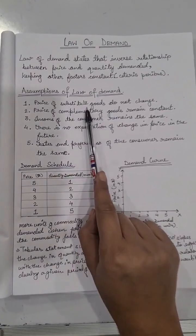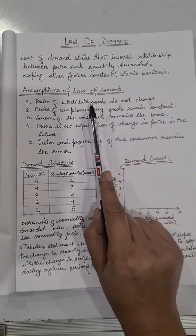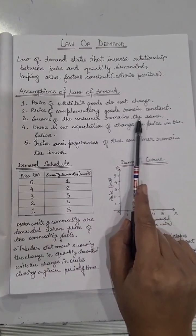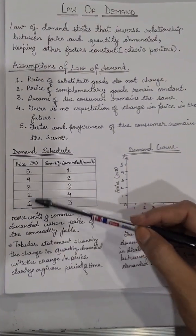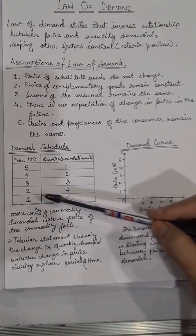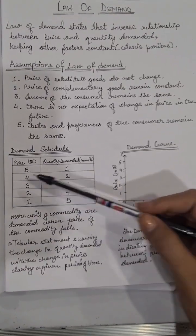The reasons for the law of demand: number one, the price of substitute goods do not change - all other factors should not change. Now you can see, when the price falls the quantity demanded increases. When the price goes from five to four, the quantity demanded increases.